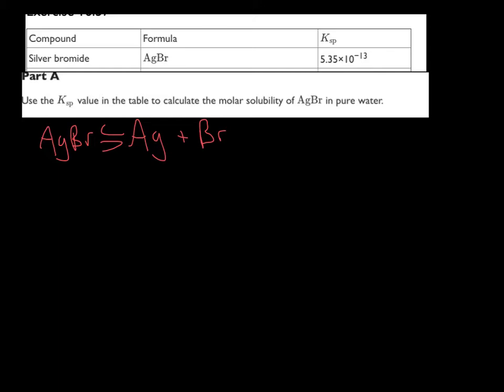Then you just write the constant expression. I'm going to put that in blue over here. KSP is equal to Ag multiplied by Br. Alright, so now you have that, we have the basics.